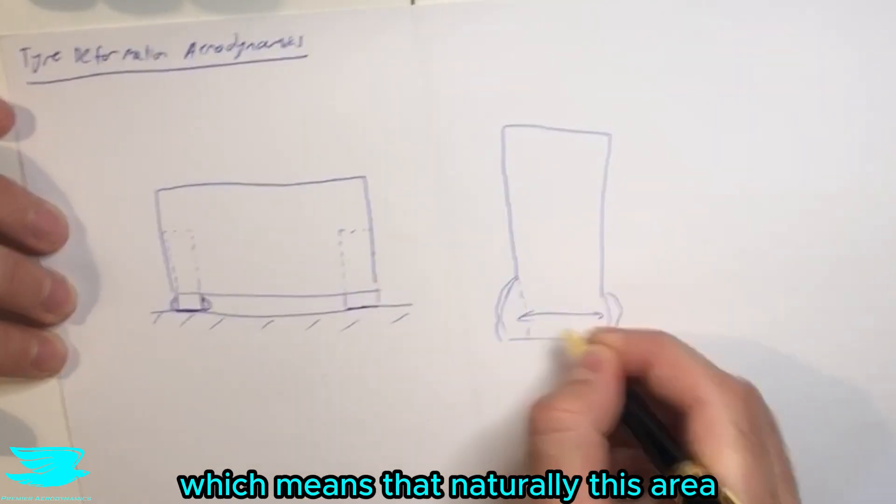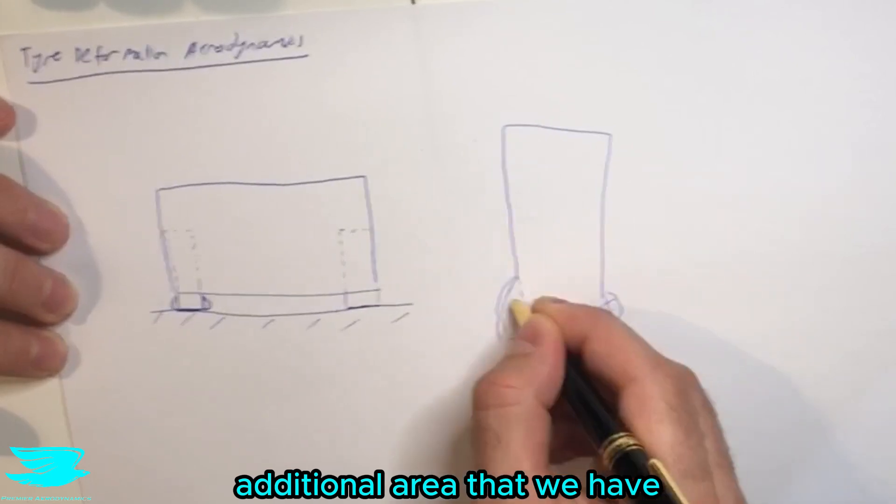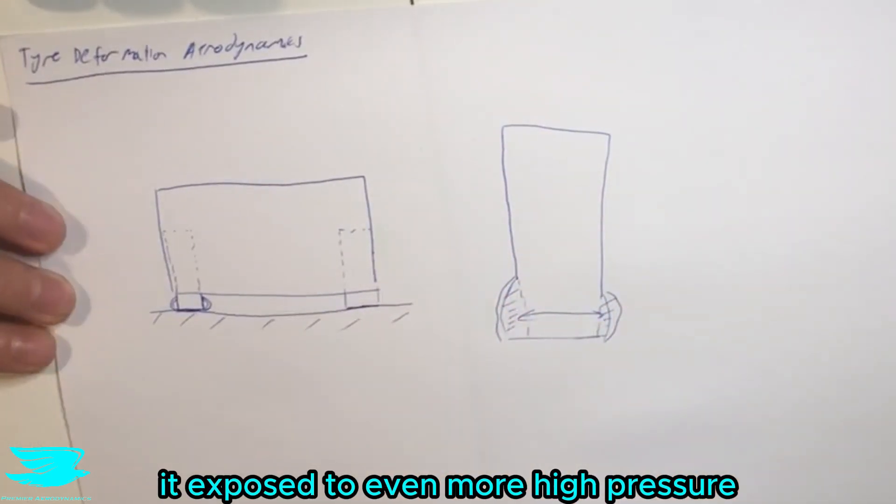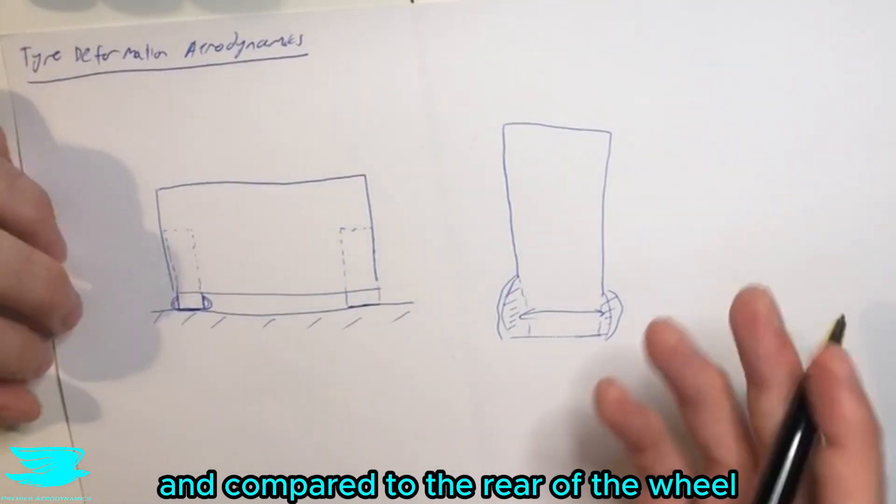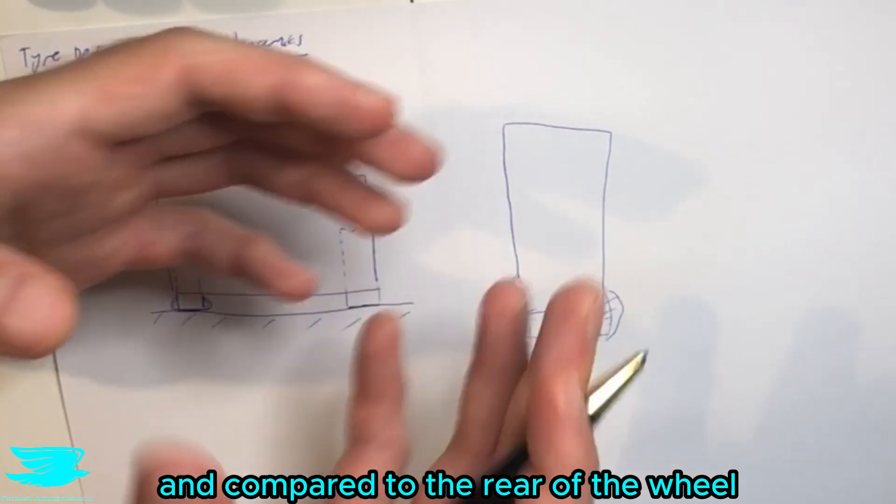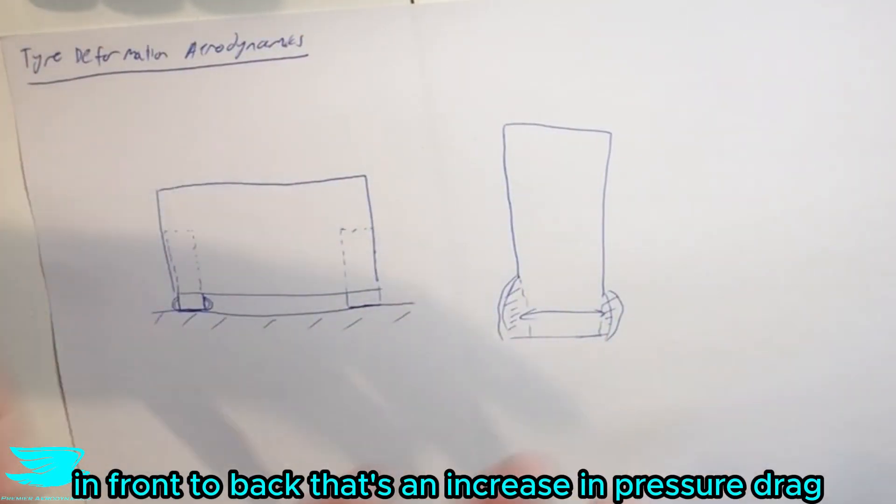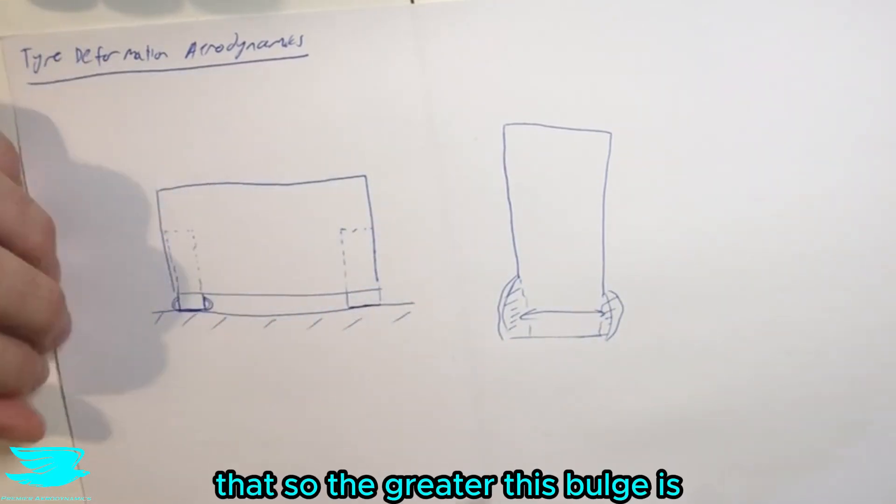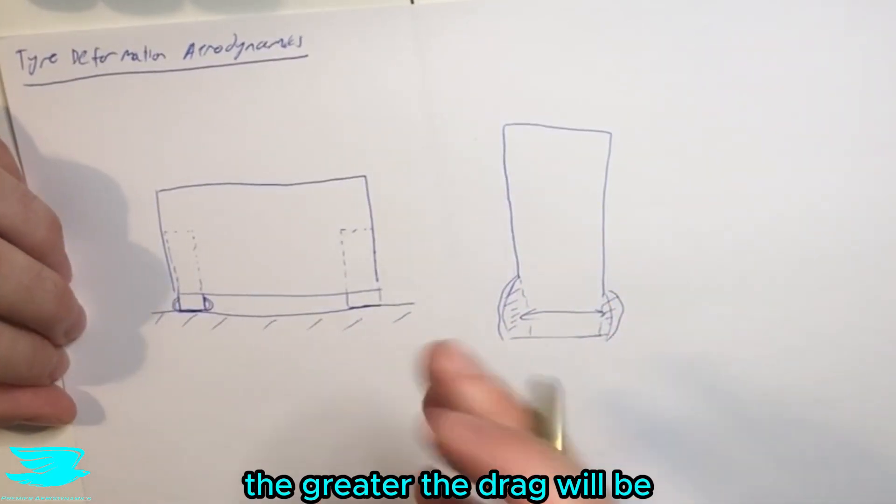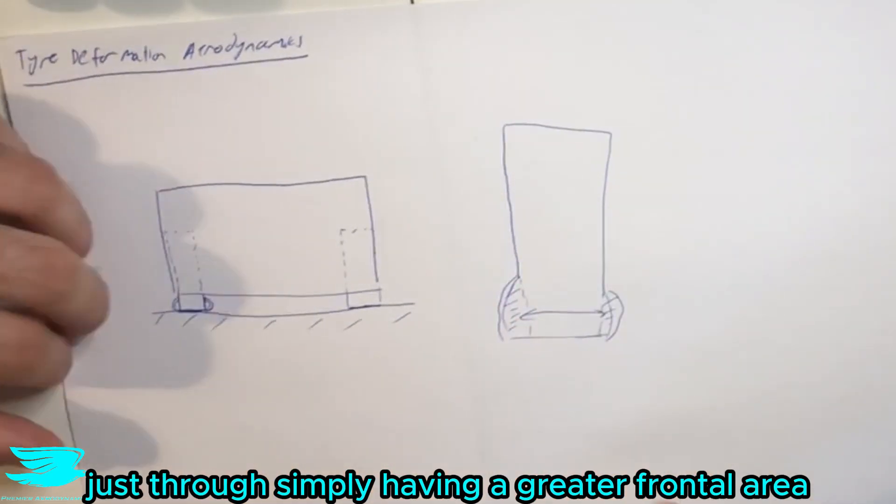Which means that naturally this additional area that we have is exposed to even more high pressure. And compared to the rear of the wheel which has lower pressure, that means we get a pressure difference front to back. That's an increase in pressure drag—it's as simple as that. So the greater this bulge is, the greater the drag will be just through simply having a greater frontal area.